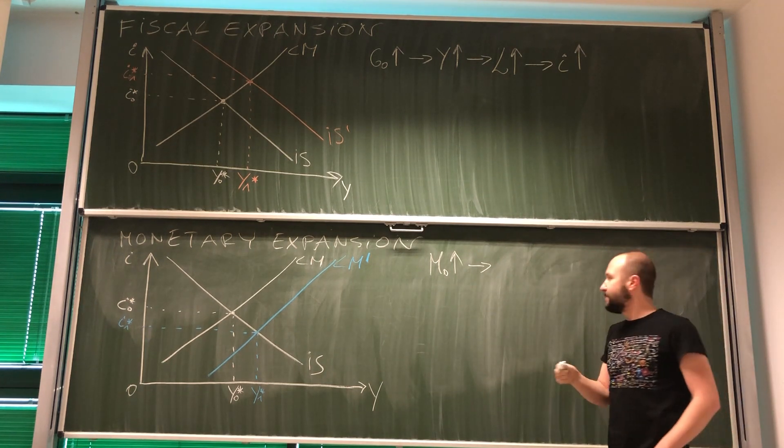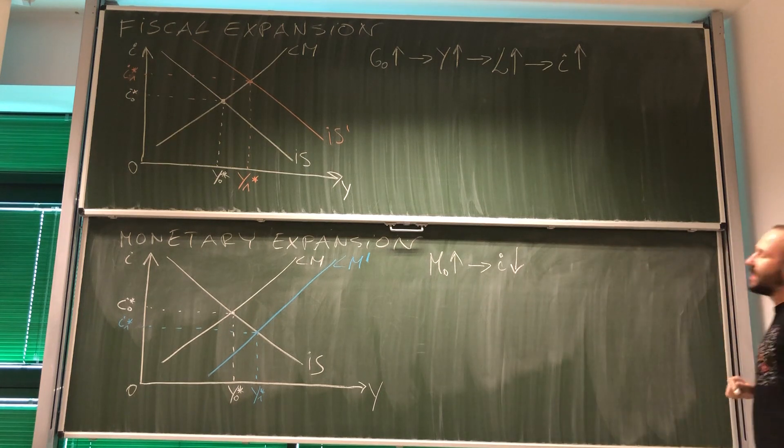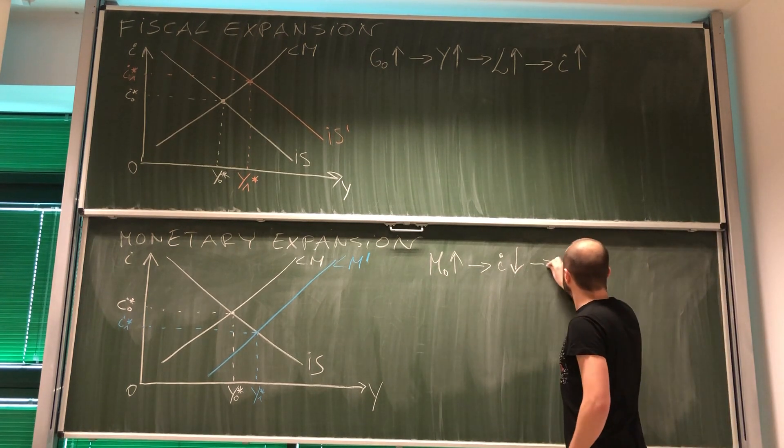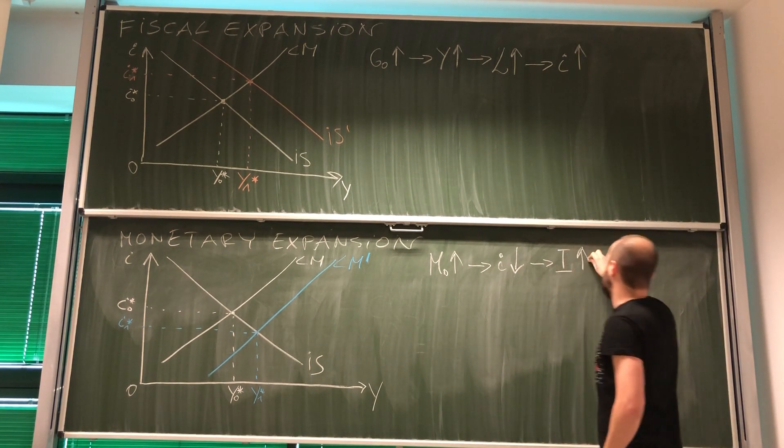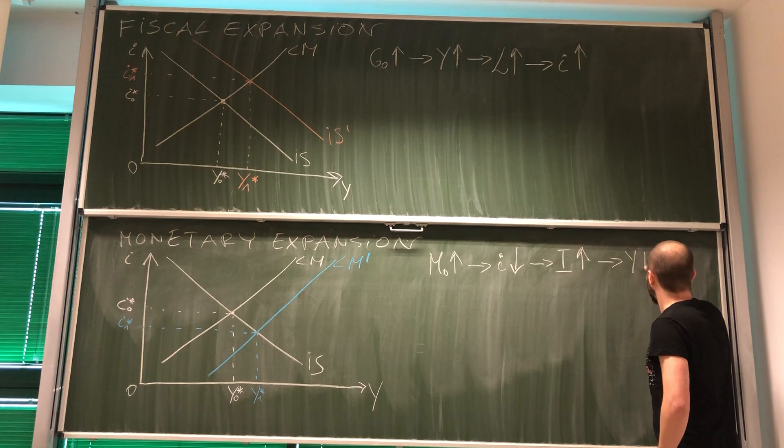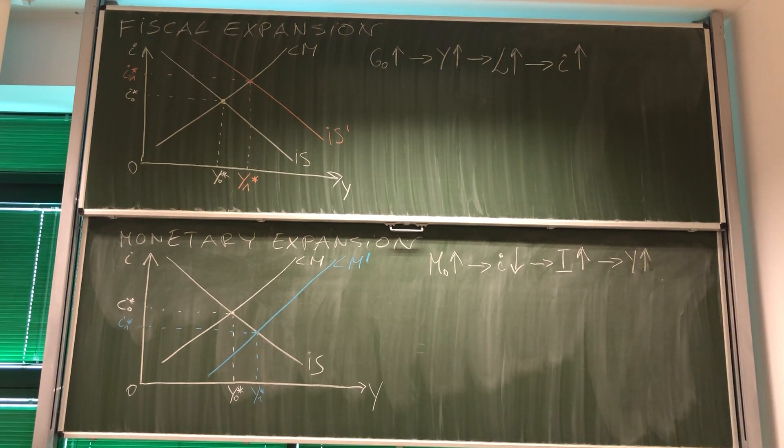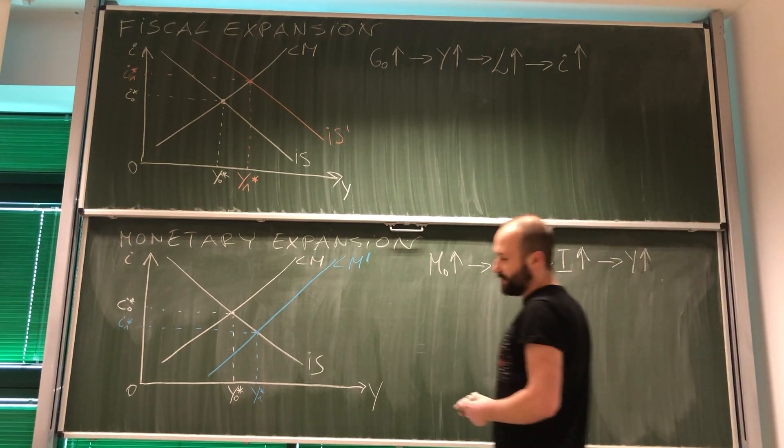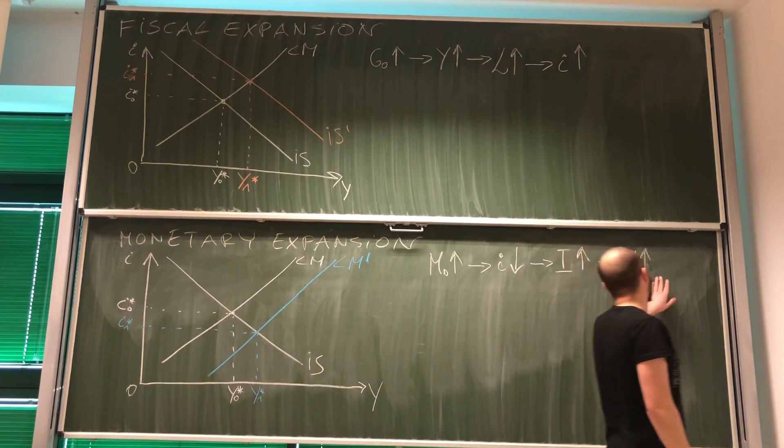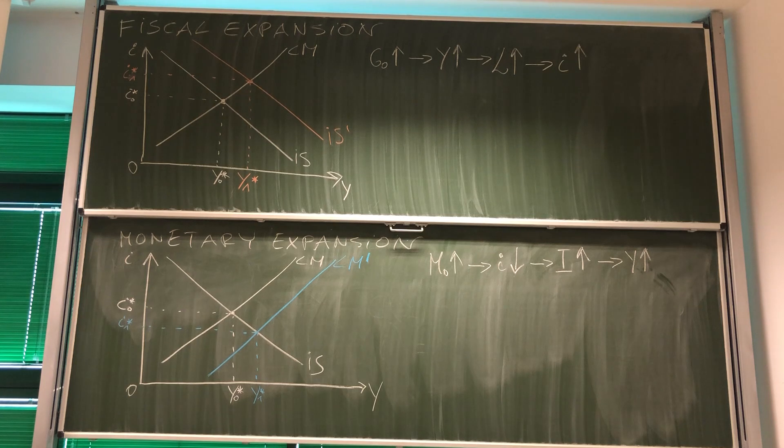If central bank increases money supply, then higher supply with the same demand means we will have lower interest rate. But lower interest rate means higher investment. Higher investment as a part of aggregated expenditure means higher GDP. And these three steps, but those four changes are everything that we need to know from IS-LM model to extend it to the open-economy version of IS-LM-BP.